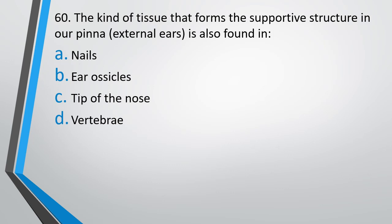Question number 60. The kind of tissue that forms the supportive structure in our pinna is also found in: nails, hair, ossicles, tip of nose, vertebrae. Correct answer is option C, that is tip of nose.